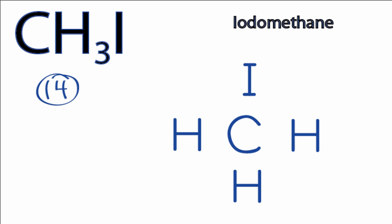We have a total of 14 valence electrons for the CH3I Lewis structure. We'll put 2 electrons between atoms to form chemical bonds.